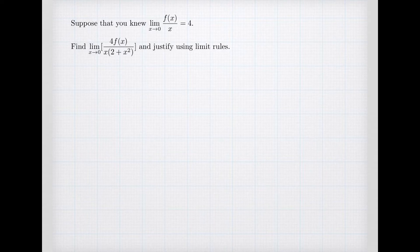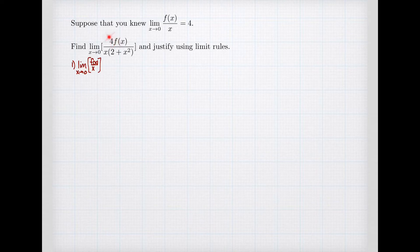Because limit rules use limits of elementary functions to calculate limits of more complex functions, we always need to start by writing down the limits of our elementary pieces. We had: f(x)/x, the constant 4, the constant 2, and x (since x² is a product of x with itself, x is the elementary piece).